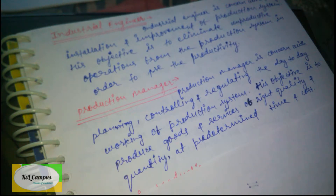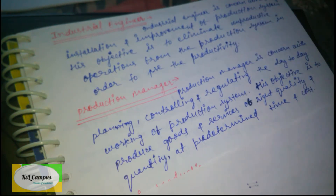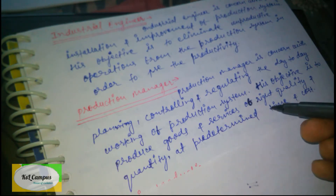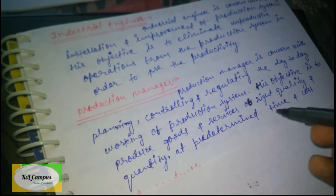The Production Manager schedules which machine produces how much product in a day, regulates all operations. His objective is to produce goods and services of right quality and quantity at a pre-determined time and cost.